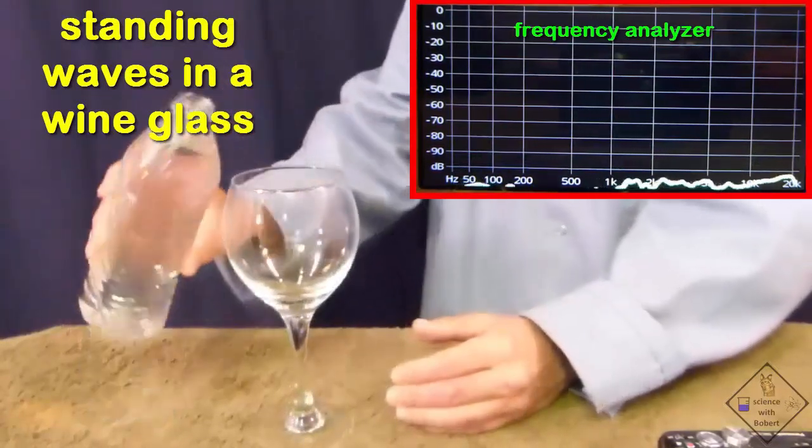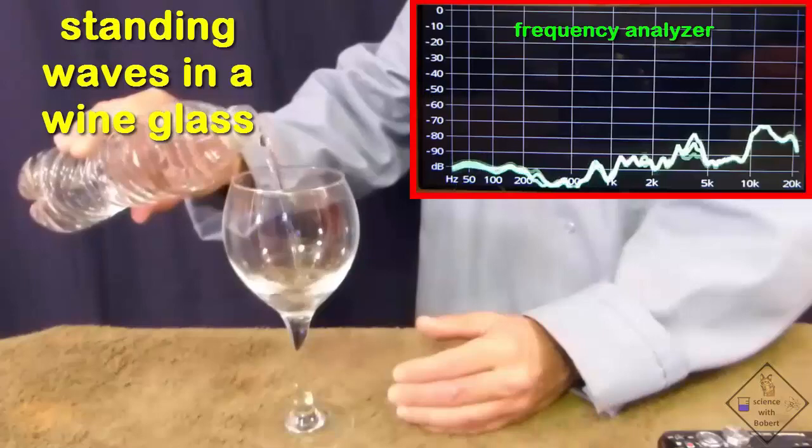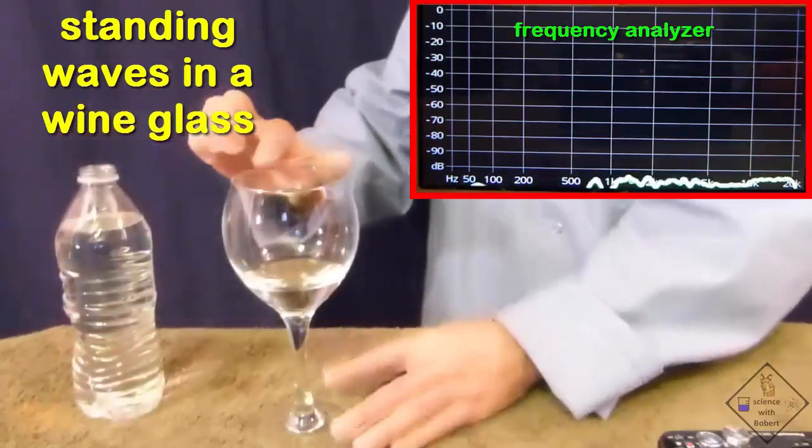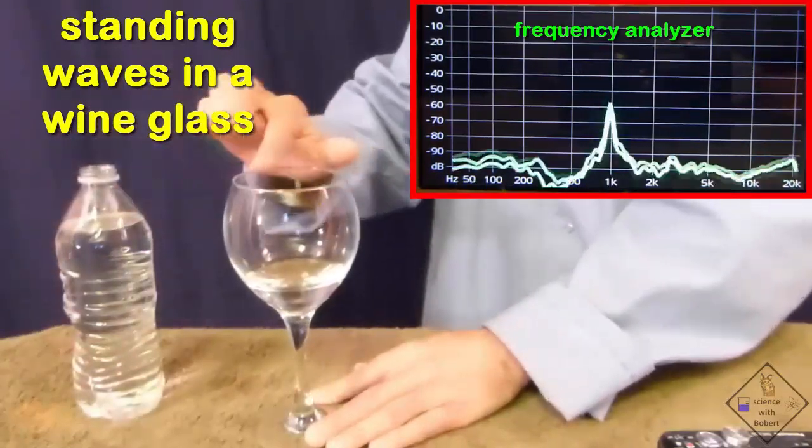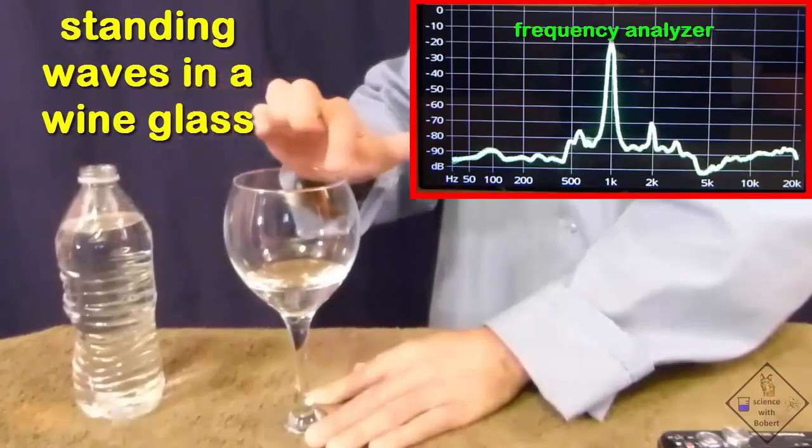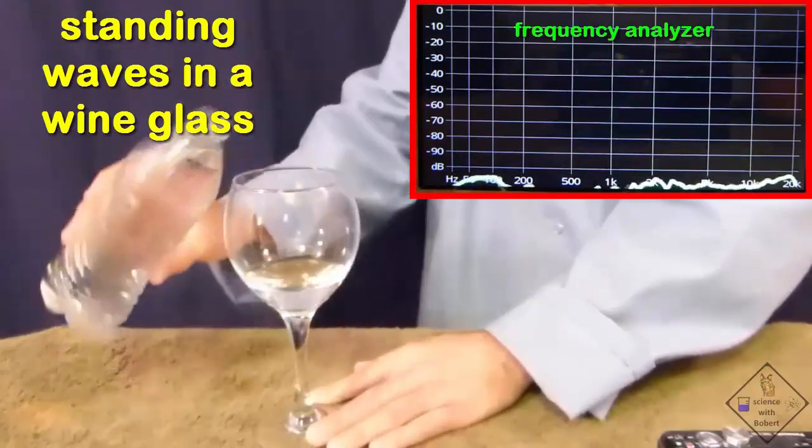You can easily change the natural frequency of a wine glass by adding water. The addition of water changes the mass of the glass, and with more water, a lower natural frequency resides in the glass.